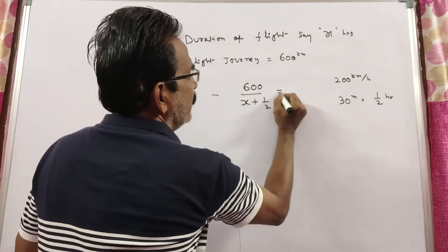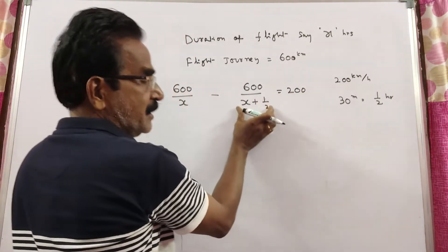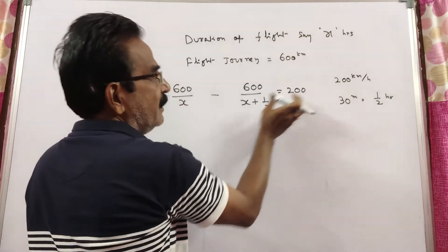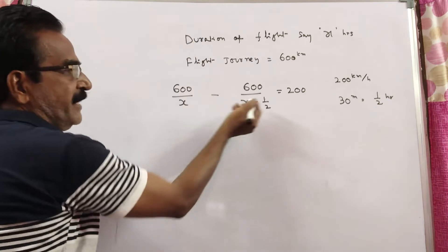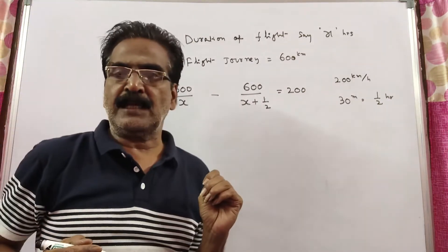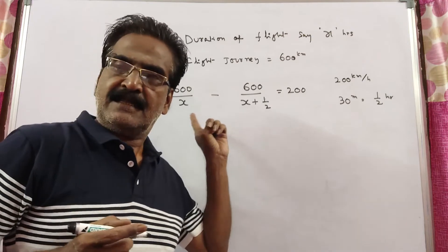This minus this gives the reduced speed - this is the original speed, this is the present speed. So friends, from this equation, you can observe that X equals 1 satisfies this equation.